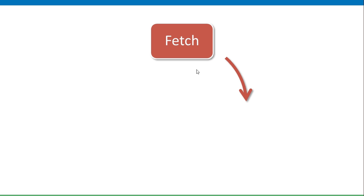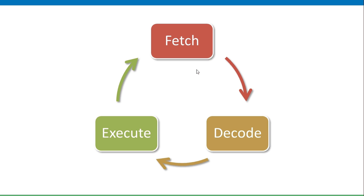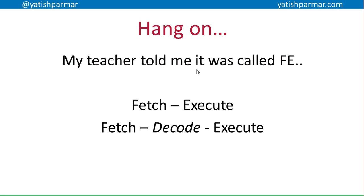Instructions being carried out involves three parts: fetch, decode, and execute. Once an instruction is executed, the next one is fetched, decoded, and executed, and so on until the process is complete for that particular job or the operation of the computer. Your teacher may have called it fetch-execute — I call it fetch-decode-execute — same difference, just depends on who you're talking to.